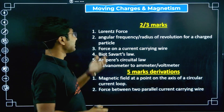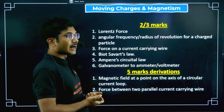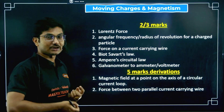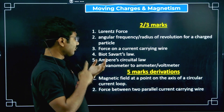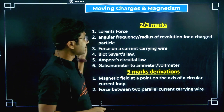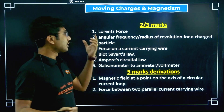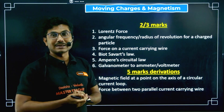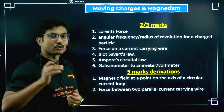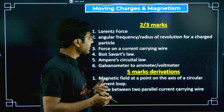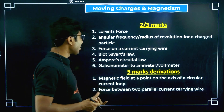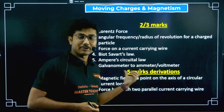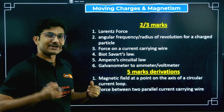Next is Moving Charges and Magnetism. From this part you will get Lorentz force and the expression for Lorentz force, along with some conceptual questions. Radius and angular frequency — the radius of revolution of a charged particle in a magnetic field — can come as a small two or three-mark derivation. Force on a current-carrying wire, Biot-Savart law, Ampere's circuital law, and galvanometer-to-ammeter and galvanometer-to-voltmeter conversions are also important.